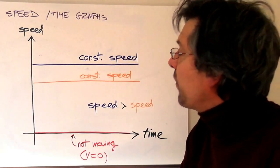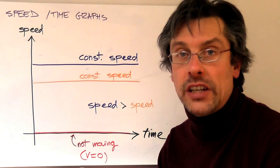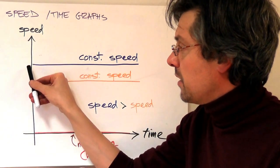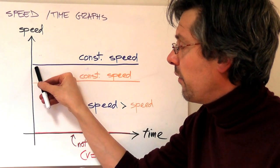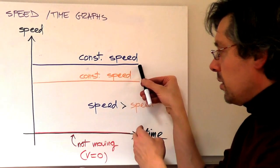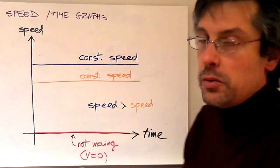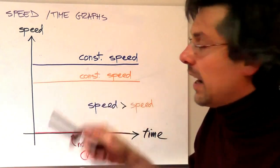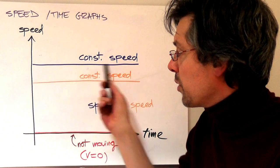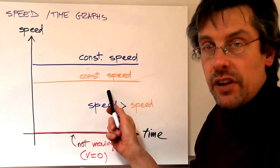In general, a flat line in a speed-time graph represents an object that has a constant speed, since this represents a speed that doesn't change as time passes. What is the difference between these two lines? The blue line has a bigger value of speed, so this represents a speed which is greater than the other one.